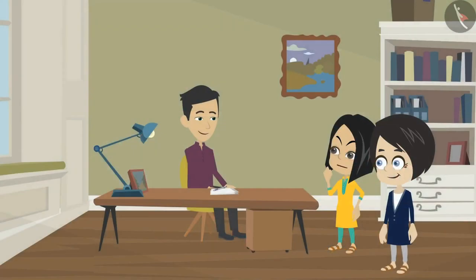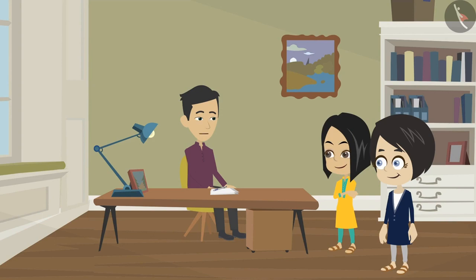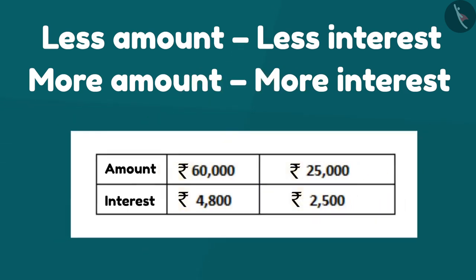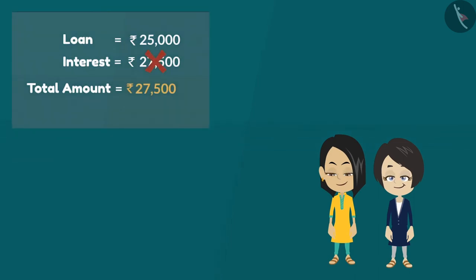Because interest changes according to the loan amount. The interest depends upon the amount of loan taken from the bank. We need to pay lower interest for a lesser amount and higher interest for a more amount. So friends, along with Bubbly and Mina, today we have learned how to find out the total outstanding amount by adding principal amount and interest.